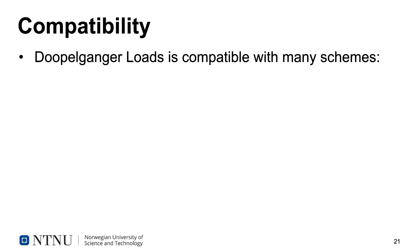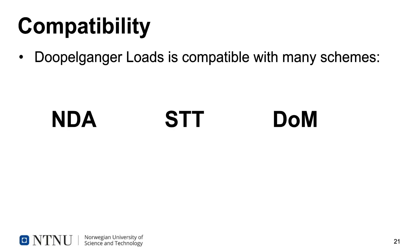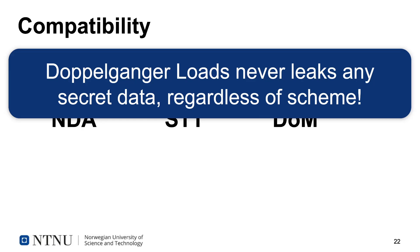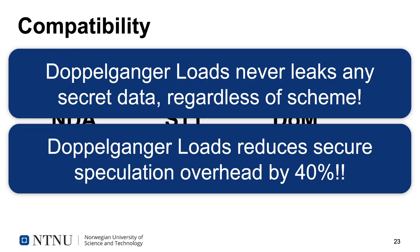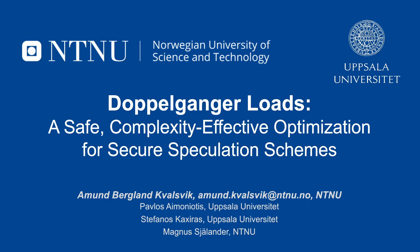Doppelganger loads is compatible with many secure speculation schemes, and was evaluated with NDA, STT, and delay on miss. Most importantly, doppelganger loads never leaks any secret data, regardless of the underlying secure speculation scheme. Doppelganger loads reduces, on average, the overhead of secure speculation schemes by 40%. Thank you for watching, and I hope to see you all at my full presentation at ISCA.